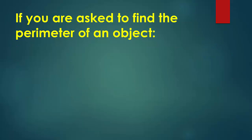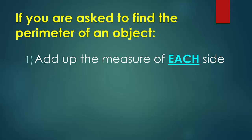So let's start with, if you're asked to find the perimeter of an object, the first step you want to do, so these are the steps that you would want to do if you're asked to find the perimeter of an object, is add up the measure of each side.